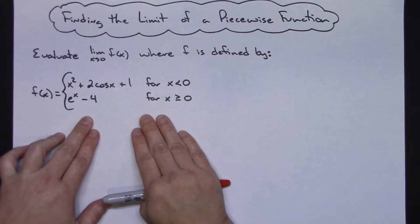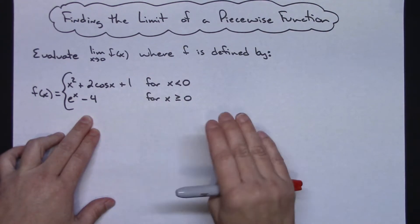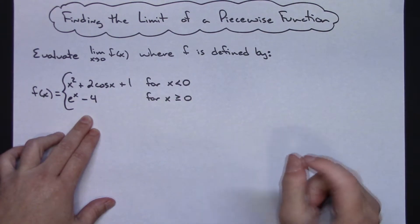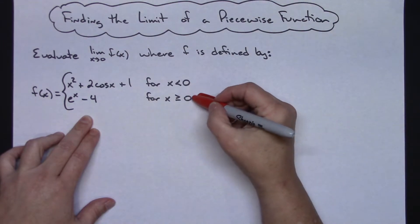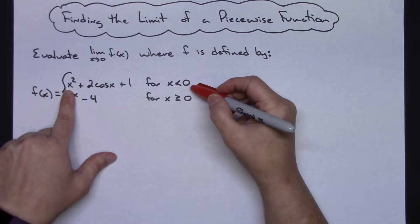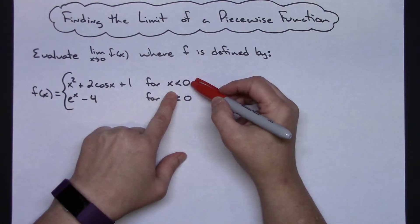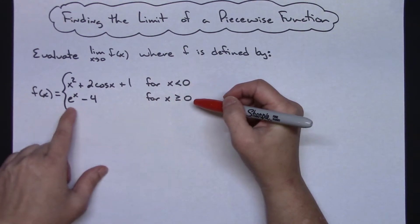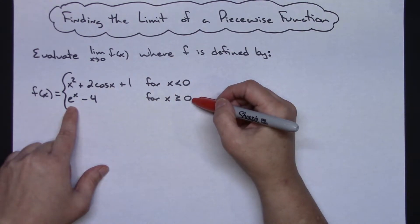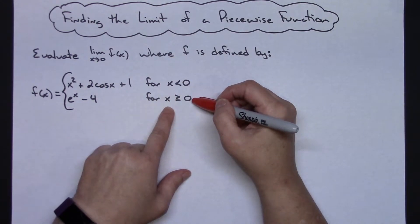We need to note that whenever you're dealing with a piecewise function, the function is actually defined by different expressions based on the conditions that you are given. So this piecewise function is defined by x squared plus 2 cosine x plus 1 for values that are less than 0, and it's defined as e to the x minus 4 for values greater than or equal to 0.